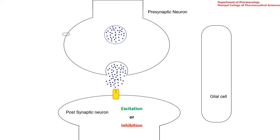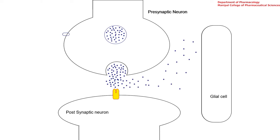Depending upon the neurotransmitter and the type of receptor, the result will be either excitation or inhibition. For example, an excitatory neurotransmitter like glutamate may cause depolarization and excitation of the post-synaptic neuron, whereas inhibitory neurotransmitters like GABA or glycine will cause hyperpolarization and inhibition. Later, the neurotransmitter dissociates from the receptors and diffuses away. The diffused neurotransmitters may then be taken up by neurons through reuptake transporters, taken up by supporting glial cells, or metabolized and degraded.